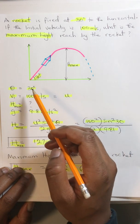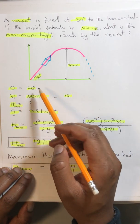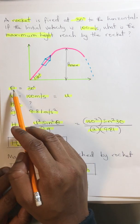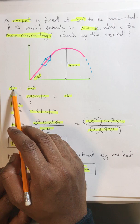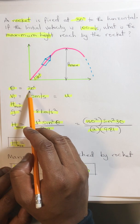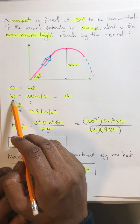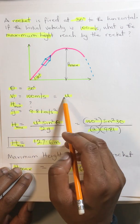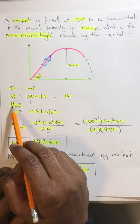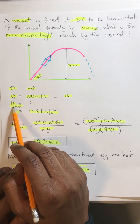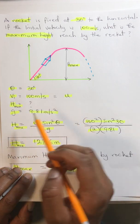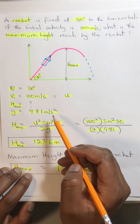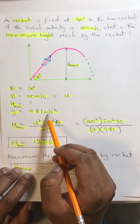We need to bring out all the parameters from our question. We have our angle of projection which is 30 degrees, our initial velocity given as 100 meters per second which is u, our highest height we are supposed to find, and g which is acceleration due to gravity 9.81 meters per second squared.